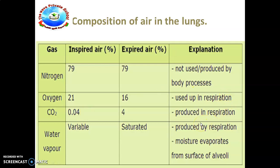That is produced in respiration. Water vapor - it is variable in inspiration and the expiration is saturated. The explanation for water vapor is it's produced by respiration and moisture evaporates from surface of the air. Air is a mixture of gases, so each component gas exerts a partial pressure in proportion to how much it is present.